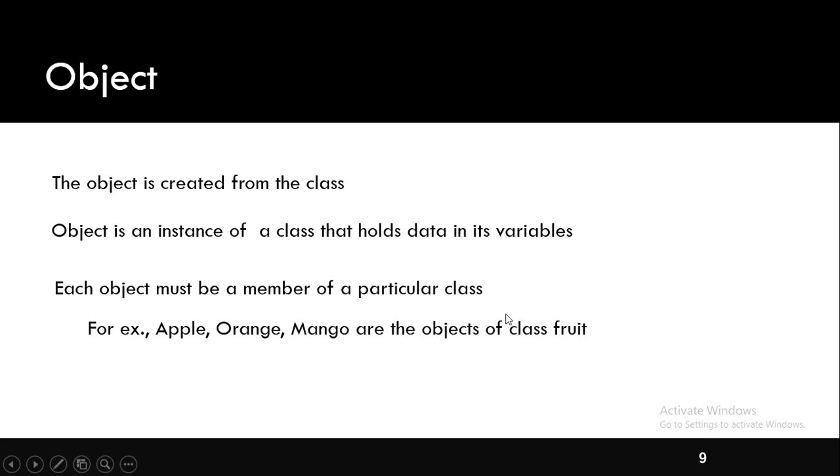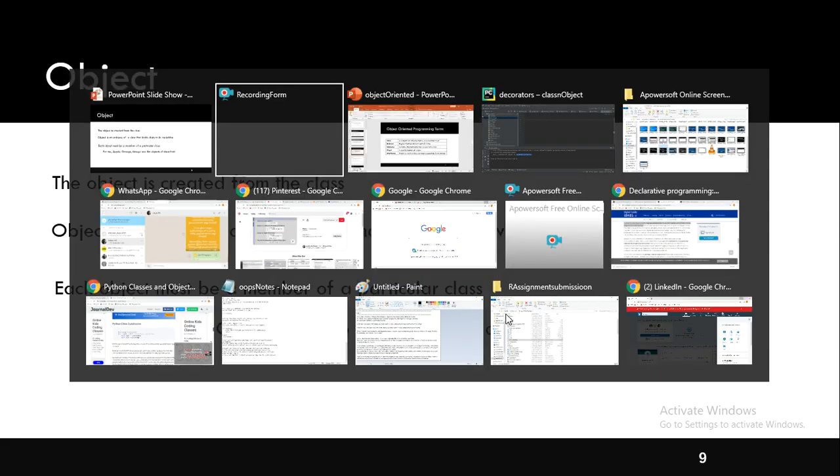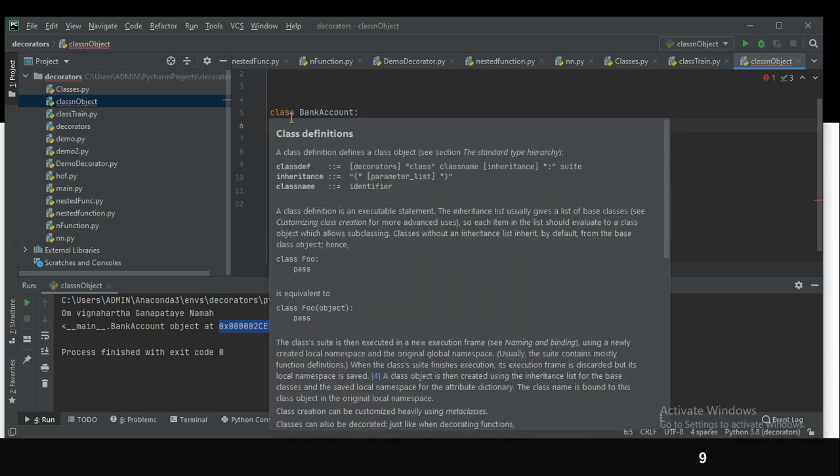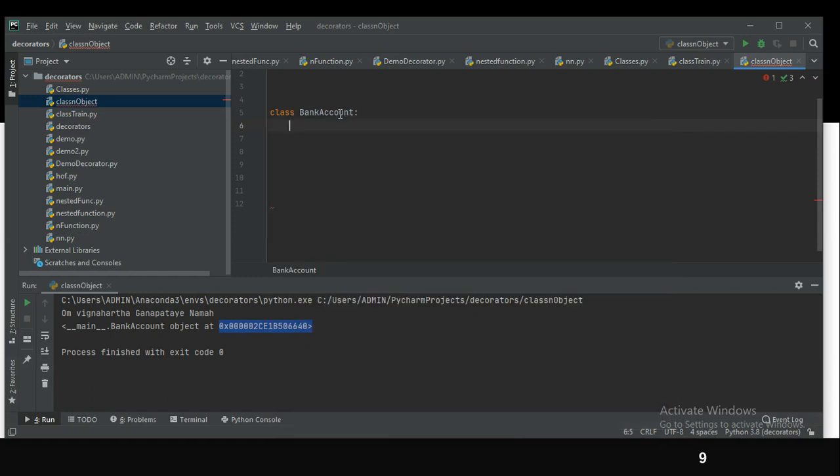Now let us go ahead and see how to create a simple class in PyCharm. I am going to create a class by the name of bank account. To create a class, we need to use the keyword 'class' followed by the class name. Here 'class' is the keyword and bank account is the class name.